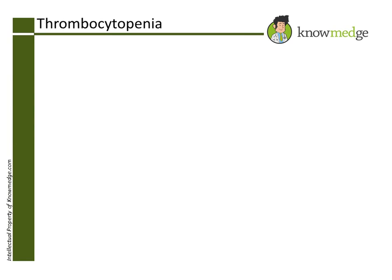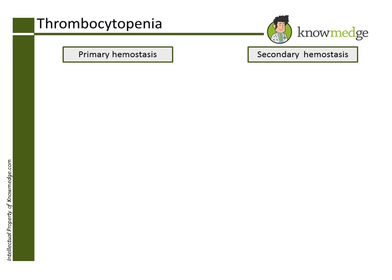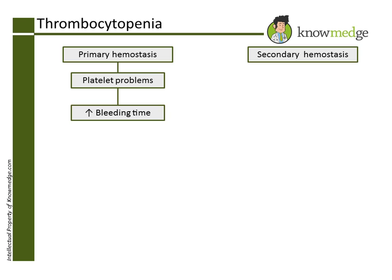Bleeding disorders are broken down into abnormalities with primary hemostasis and secondary hemostasis. Primary hemostasis is due to platelet problems and will have an elevated bleeding time on labs. Secondary hemostasis is due to coagulation factor problems, which will be discussed in more detail in other questions.